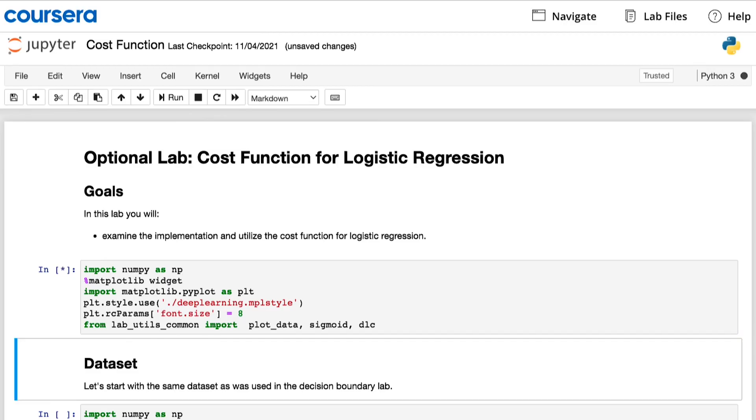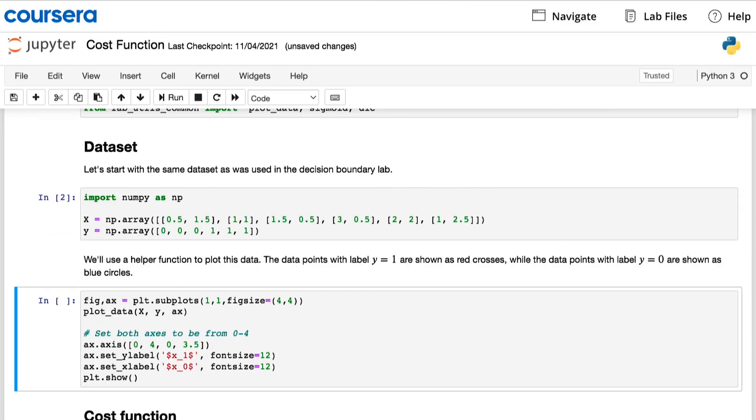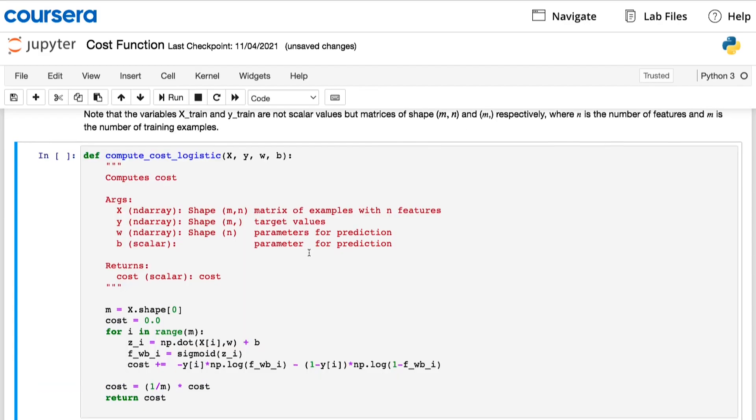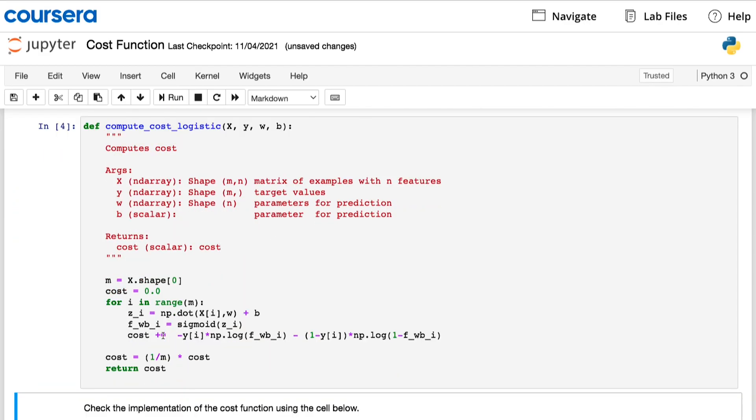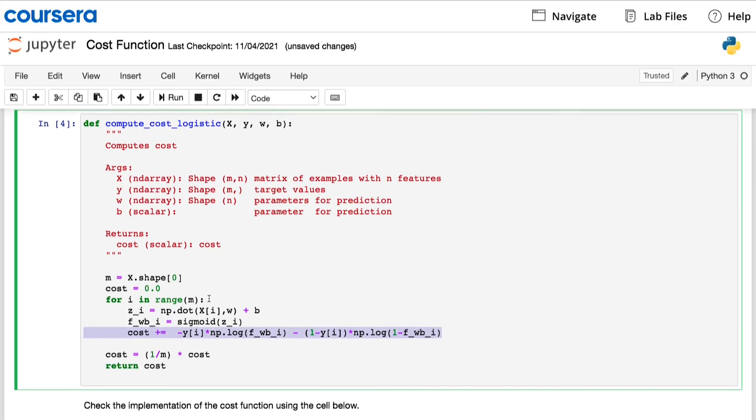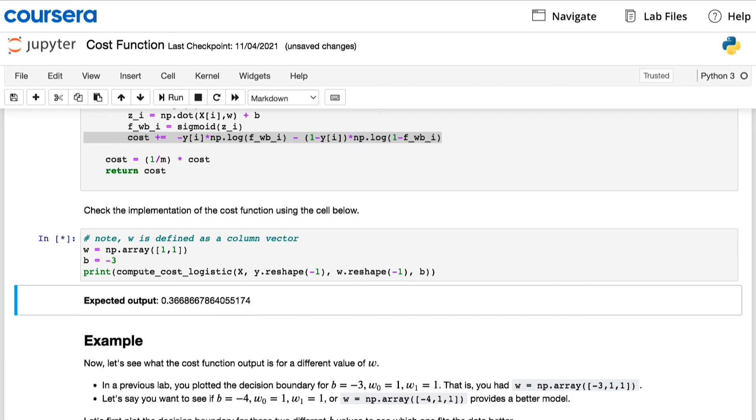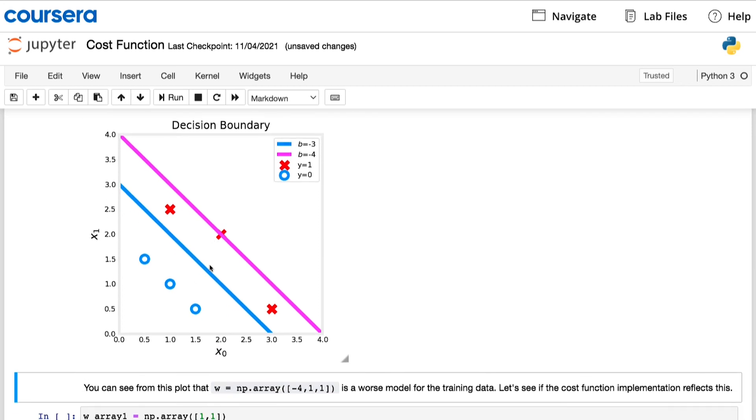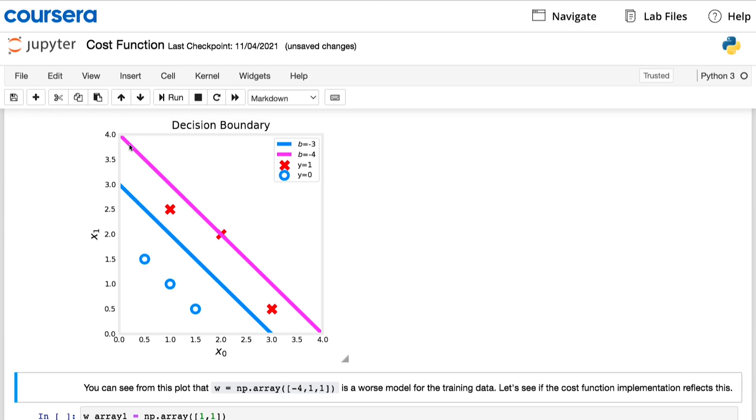The upcoming optional lab will show you how the logistic cost function is implemented in code. I recommend taking a look at it because you implement this later in the practice lab at the end of the week. This upcoming optional lab also shows you how two different choices of the parameters will lead to different cost calculations. So you can see in the plot that the better fitting blue decision boundary has a lower cost relative to the magenta decision boundary.